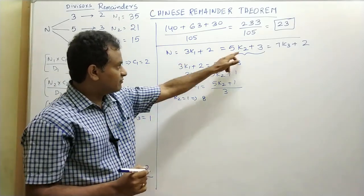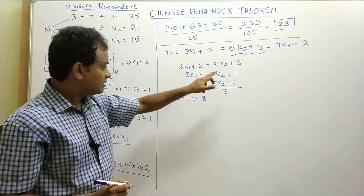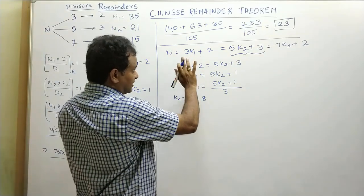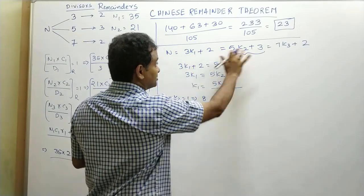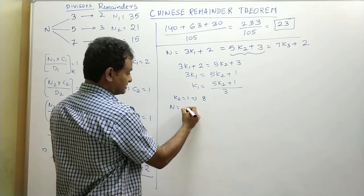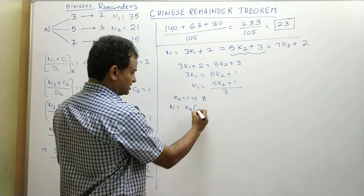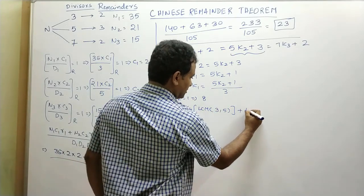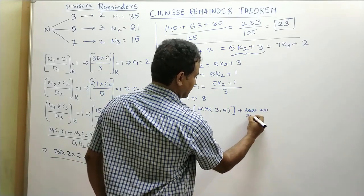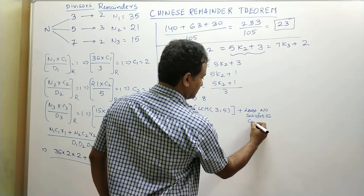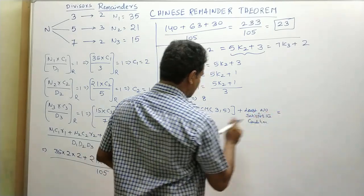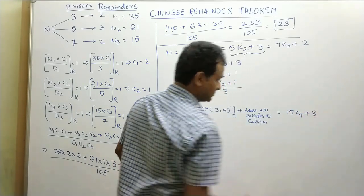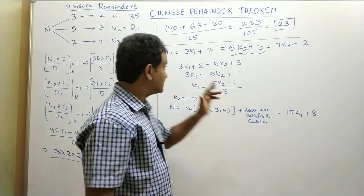When you divide 8 by 3, you get remainder 2; when you divide 8 by 5, you get remainder 3. Once you have k2, the general format of all numbers satisfying the first two equations is: n = k4 × LCM(3, 5) + least number = 15k4 + 8. All numbers in the format 15k4 + 8 satisfy the first two equations.